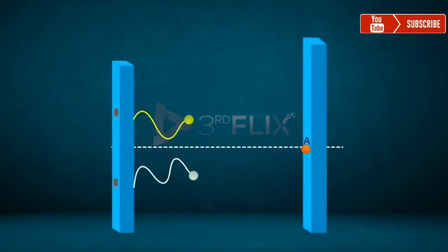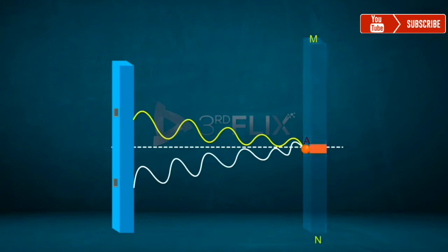In this figure, the two light waves travel equal distances to reach point A on the screen MN. They will be in phase. Hence, a constructive interference pattern occurs and a bright fringe is formed.